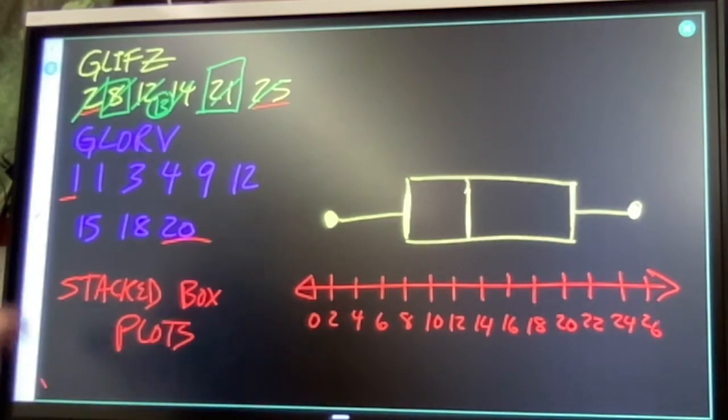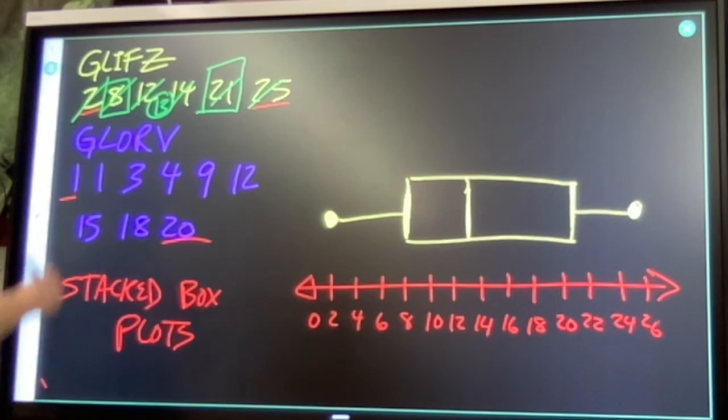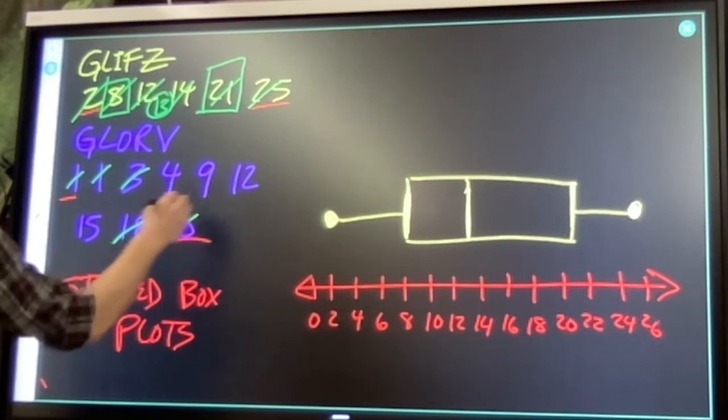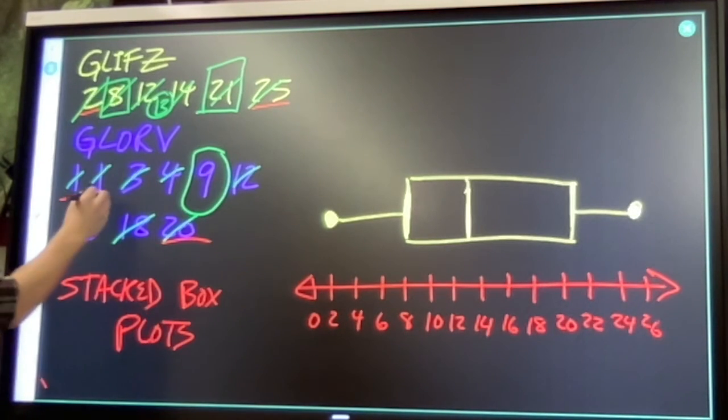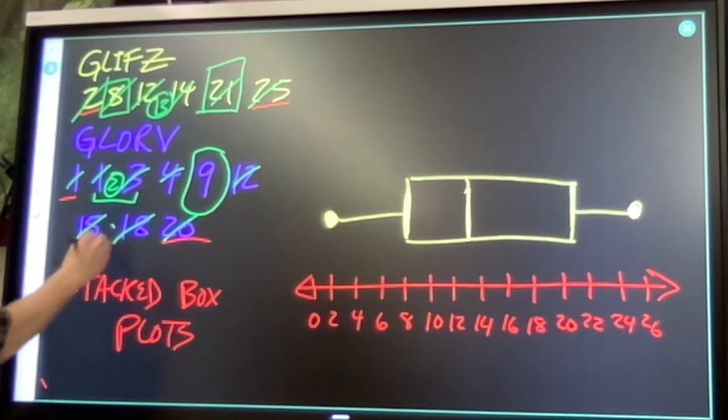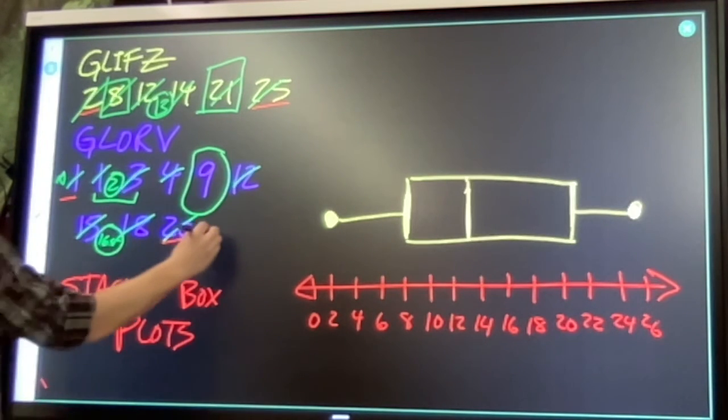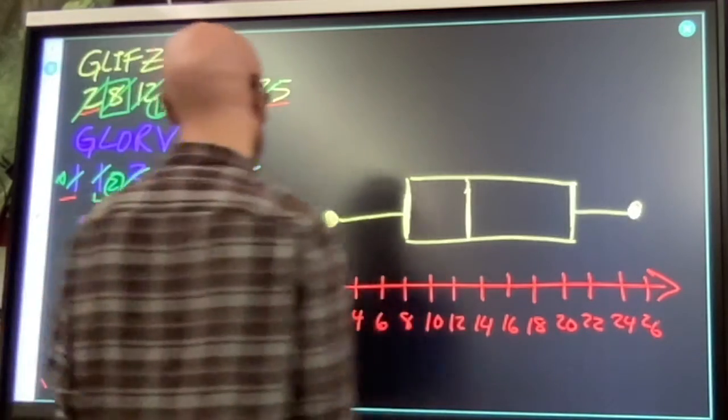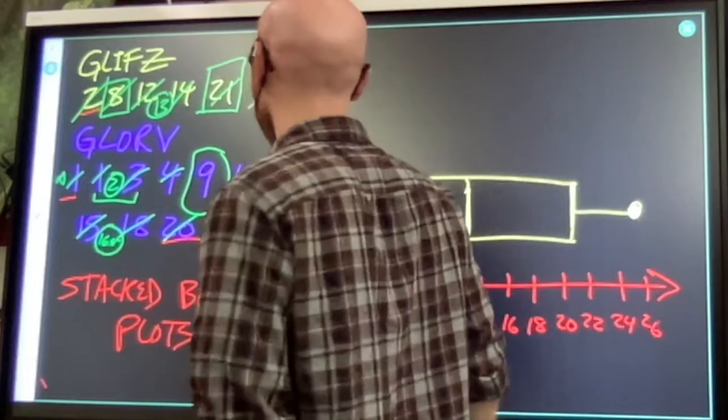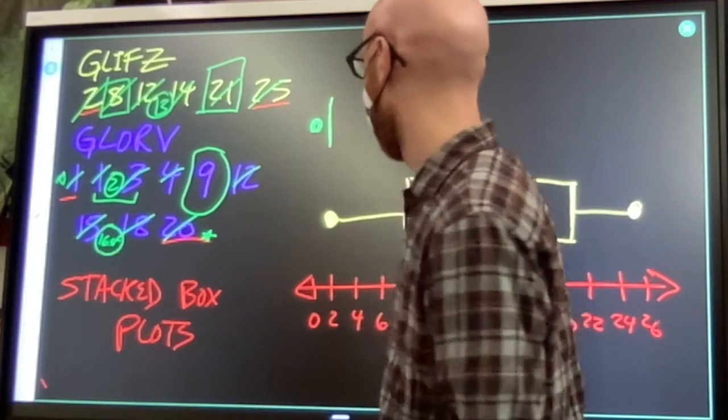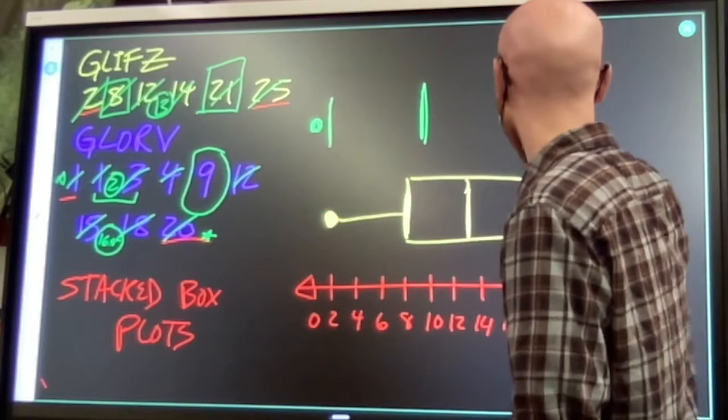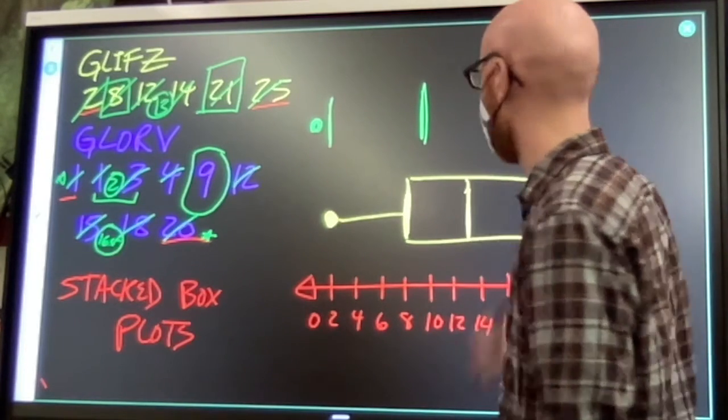Then, you just do the same thing with your other set. Find the middle number, 9 is my median. Look at my lower half, got 2 in the middle here, halfway between them is the number 2. Look at my upper half, 12, 15, 18, 20. I need something in here between 15 and 18, 16.5. And then, of course, my minimum, 1, and my maximum, 20. So, 1, 2, 9, 16.5, and 20.